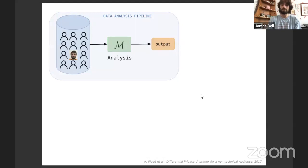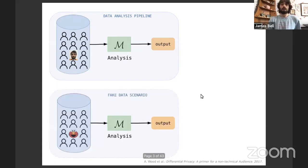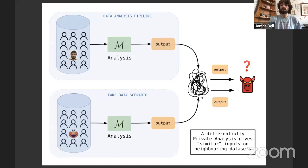So firstly, you should recognize this from the previous talk if you were paying attention. Differential privacy: we have some data analysis pipeline, we have a dataset which has someone's personal data in it, and we want the output of this analysis pipeline to not leak too much about them. We're going to do the same analysis on a different dataset which is the same except one person's data has been changed — I've been replaced by Elmo here. And we want to ask that an adversary can't really tell between these two situations.